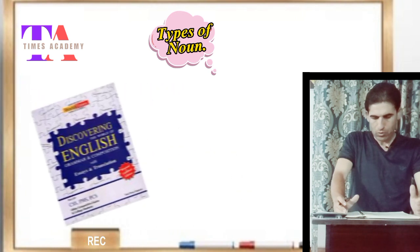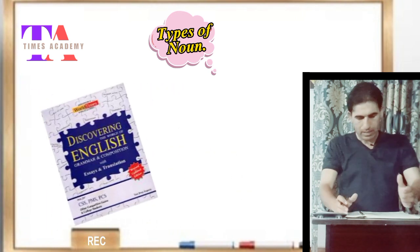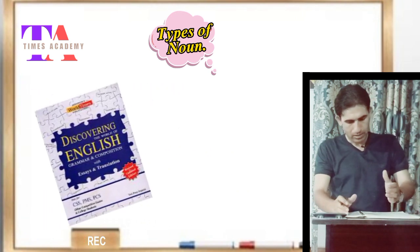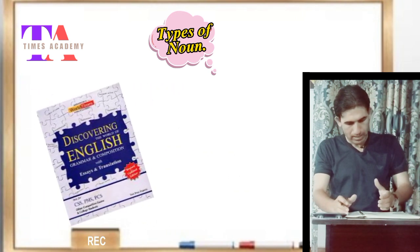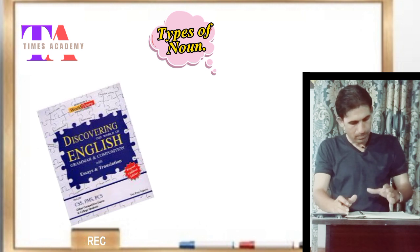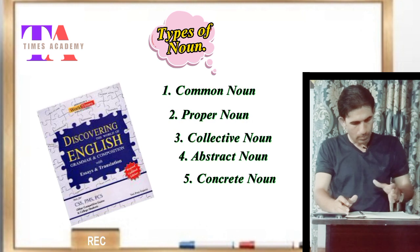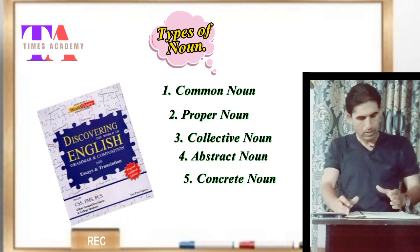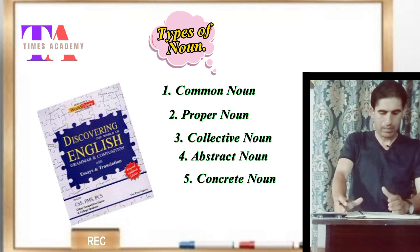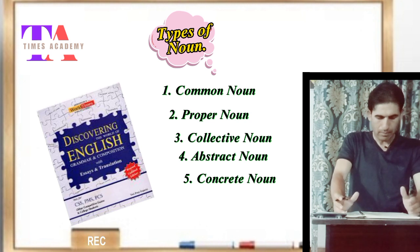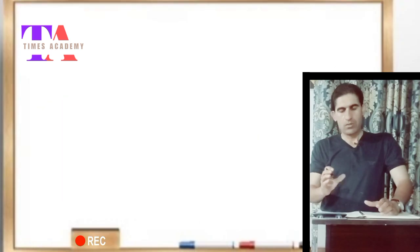Moving toward the last source, Discovering the World of English: Grammar and Compositions, the noun has five important classes: number one, common noun; number two, proper noun; number three, collective noun; number four, abstract noun; and number five, concrete noun.